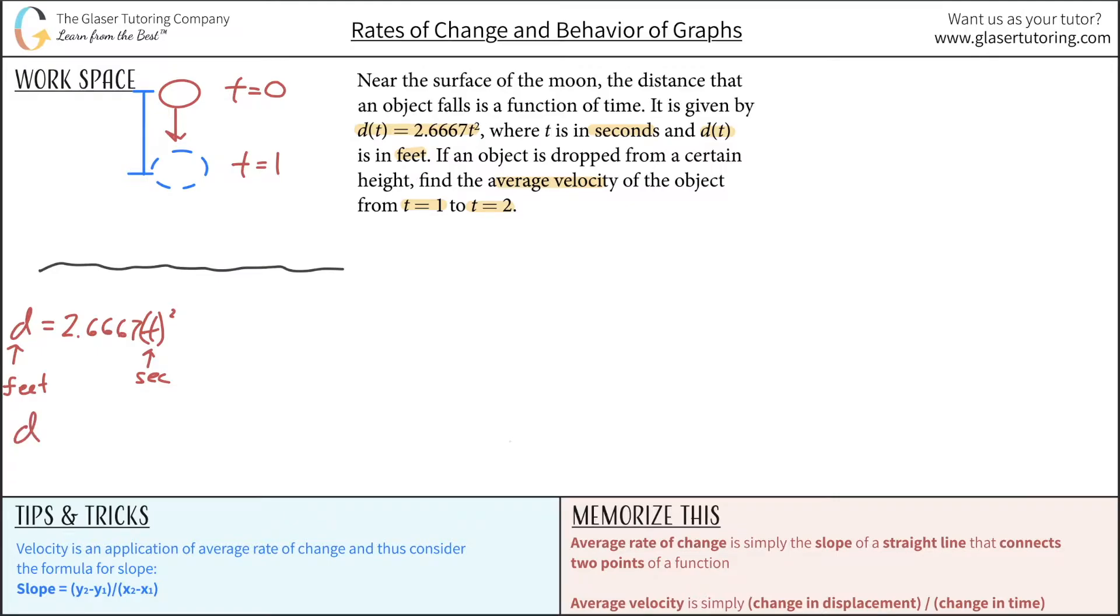Let's actually calculate it. The distance that would have been covered is equal to 2.667 times the time that has elapsed, which is 1 second squared. The distance here would be equal to 2.6667 feet. So the distance that the ball traveled is going to be 2.6667 feet.